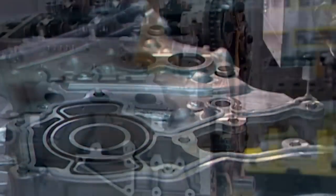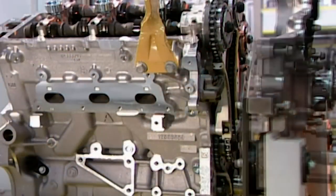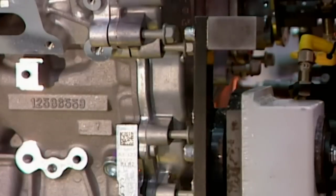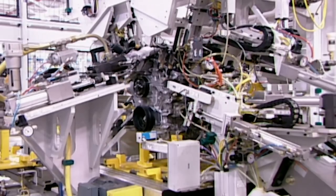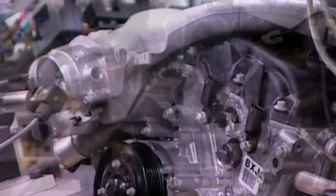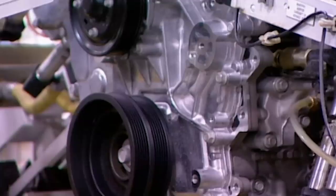A robot applies sealant and then bolts a cover onto the front of the engine block over a component called the timing chain. This chain connects the crankshaft to the camshafts so they rotate in unison. This ensures the valves open when the pistons are in the right position.